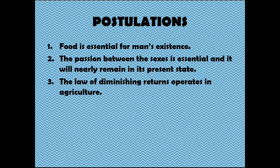Here we have the postulations or assumptions of the theory. The first assumption is that food is essential for man's existence — there is no alternative for food. Next, the passion between the sexes is essential and will nearly remain in its present state. Third, the law of diminishing returns operates in agriculture. The law of diminishing returns states that there is a point at which the level of profits or benefits gained is less than the amount of money or energy invested, and this logic applies to agriculture.